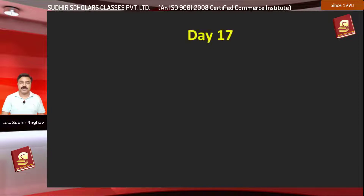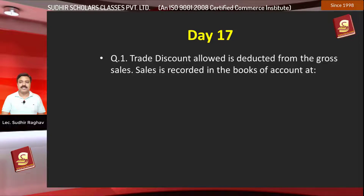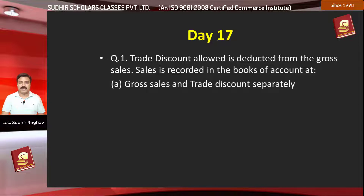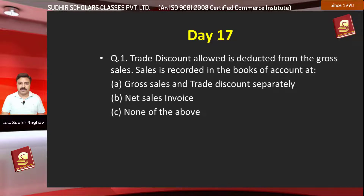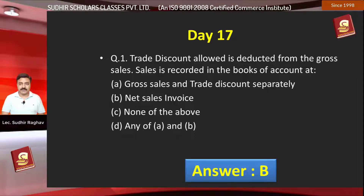First question: Trade discount allowed is deducted from the gross sales. Sales is recorded in the books of account at — Option A, gross sales less trade discount separately; Option B, net sales value; Option C, none of the above; Option D, any of A and B. The answer is B.